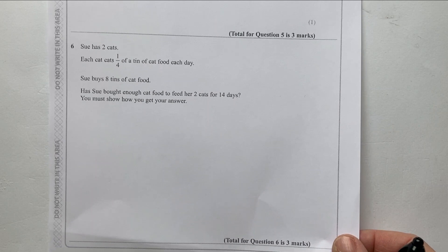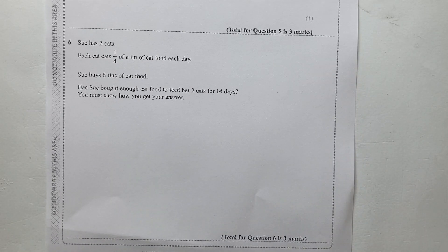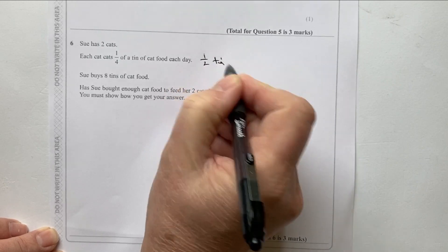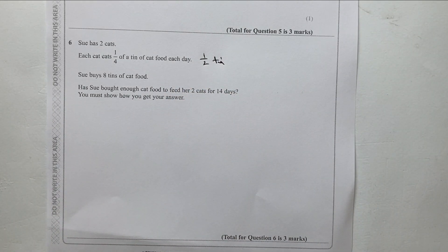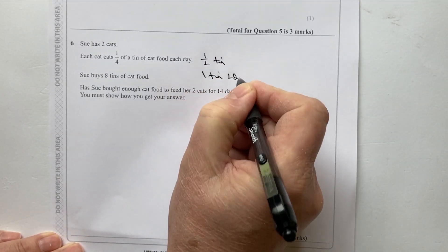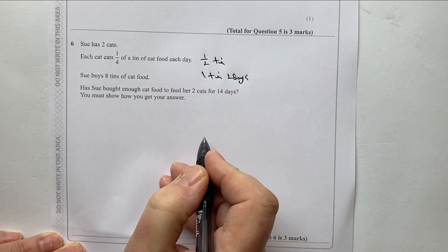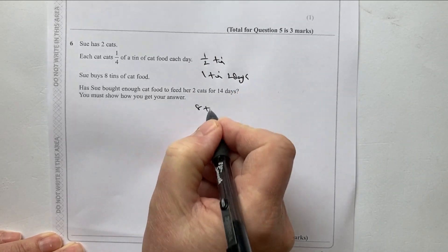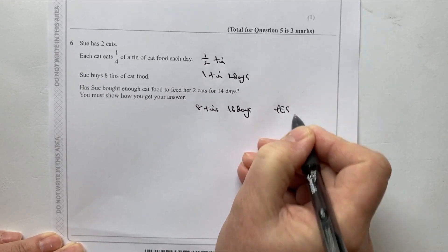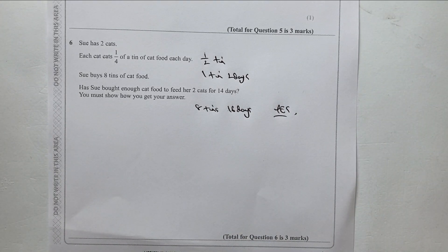Sue has two cats. Each cat eats a quarter of a tin of food each day, which means half a tin is used every day. She buys eight tins. Has Sue enough food for 14 days? One tin will last two days, so eight tins will last 16 days. The answer is yes — she does have enough food.